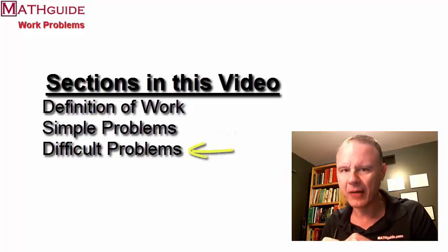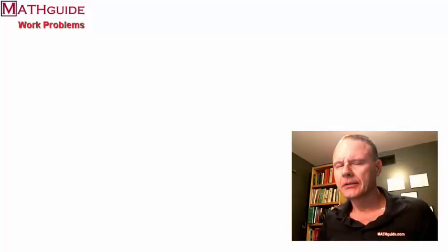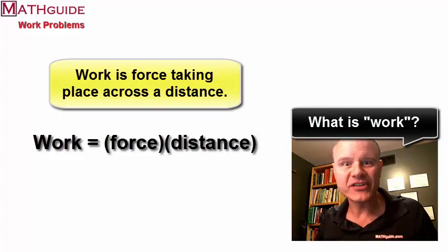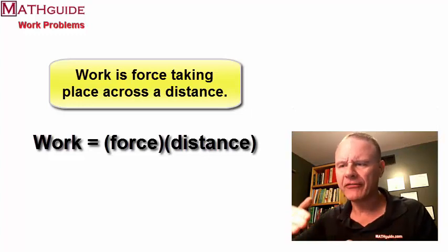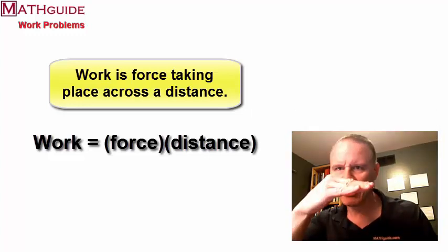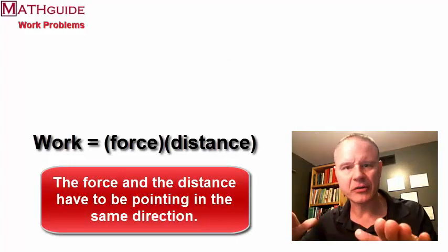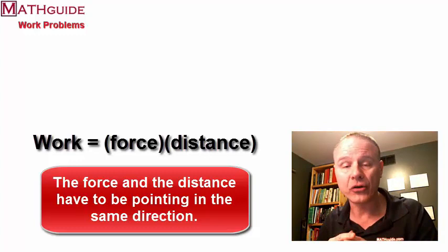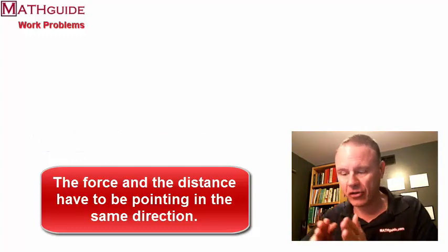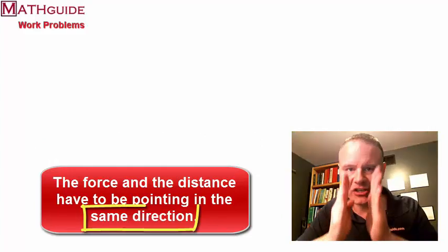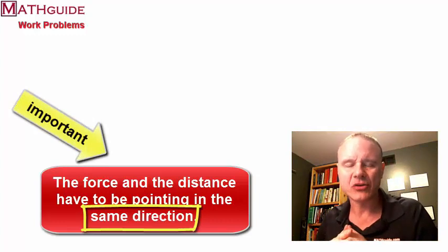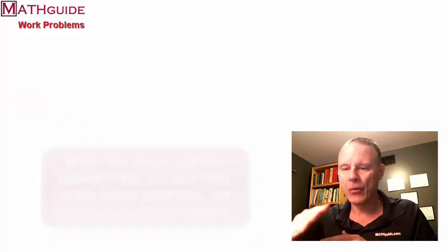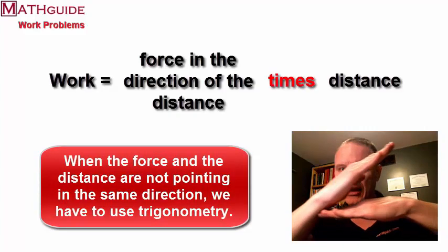So what is work? Work is defined mathematically as force times distance. If you have a force going in a direction and you carry out that force for a certain distance, you simply multiply the force by how far you enact it to get the amount of work done — as long as the force and the distance are going in the same direction.